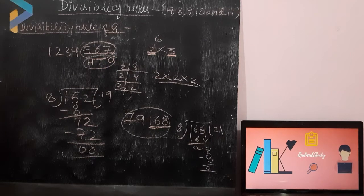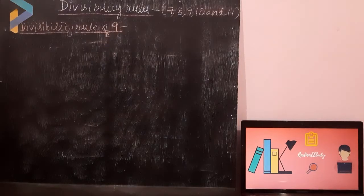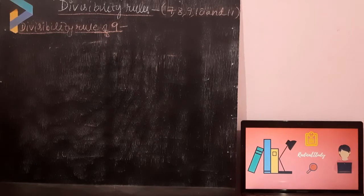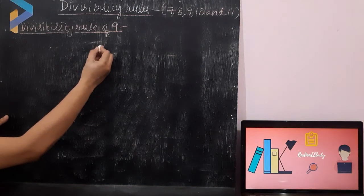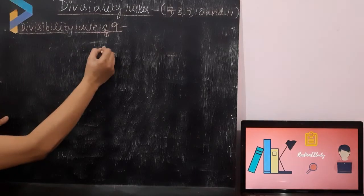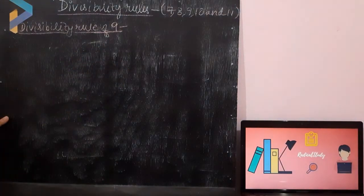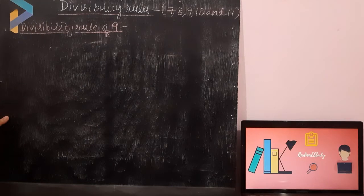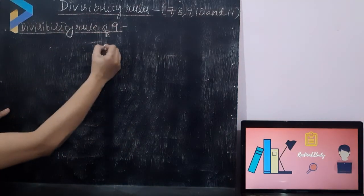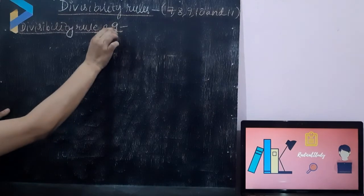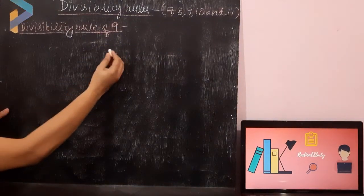Now I am going to explain the rule of 9. The rule of 9 says that a number is divisible by 9 if the sum of its digits is divisible by 9. Please recall the rule of 3 — if the sum of the digits is divisible by 3, then the number is divisible by 3. The same applies to 9: if the sum of digits is divisible by 9, then the whole number is divisible by 9.